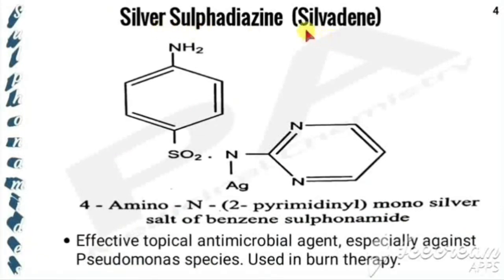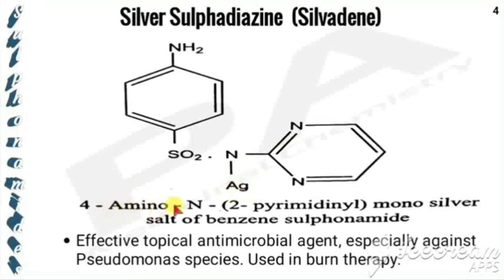Silver sulfadiazine is otherwise called Silvadene. It has the same structure as sulfadiazine, except the H in the SO2-NH is replaced by silver. Its chemical name is 4-amino-N-(pyrimidin-2-yl) monosilver salt of benzene sulfonamide. It is an effective topical antimicrobial agent, especially against Pseudomonas species, and is used in burn therapy.